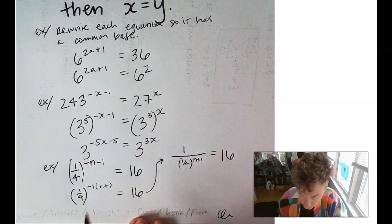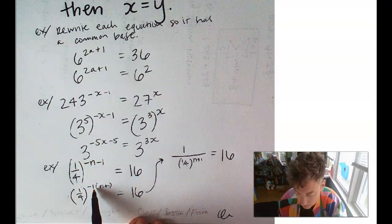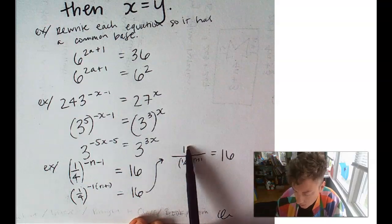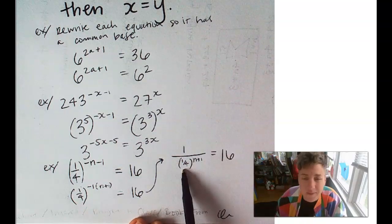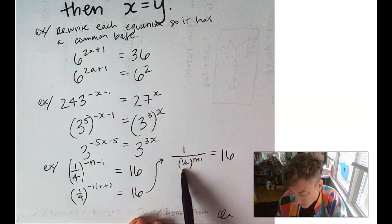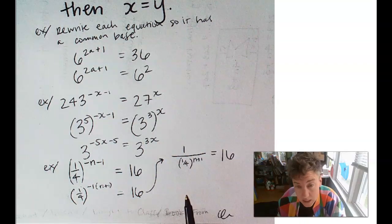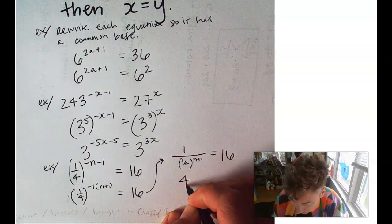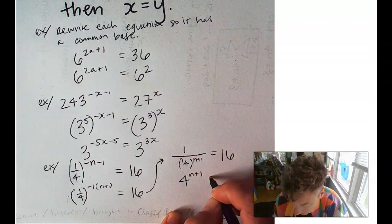Alright, this is a negative exponent, so we said, okay, well, we'll just do 1 over 1/4. 1 divided by 1/4. How many times does 1/4 go into 1? 4. So, this is really 4 to the positive n plus 1 equals 16.